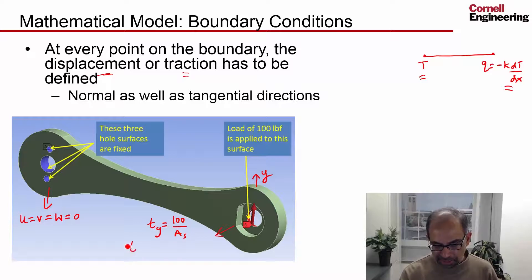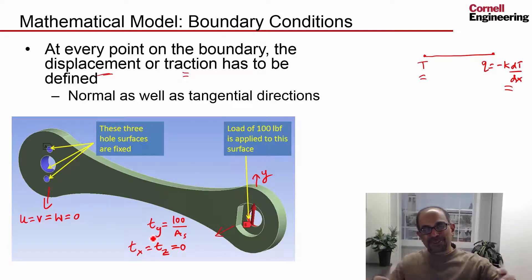And the traction in the x and z directions are going to be zero, and each of those looks like that. It filters down to a complicated set of relationships on the displacement gradients.